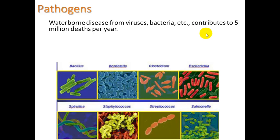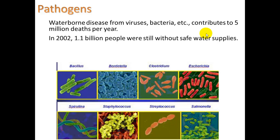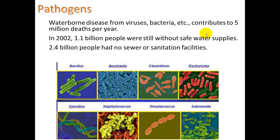Pathogens — we talk about pathogens as being disease-causing germs. Waterborne disease from viruses, bacteria, etc. contributes to 5 million deaths per year. And in 2002, 1.1 billion people were still without safe water supplies — that's practically one in seven. And 2.4 billion people had no sewer or sanitation facilities — that's like one out of three. That's amazing.